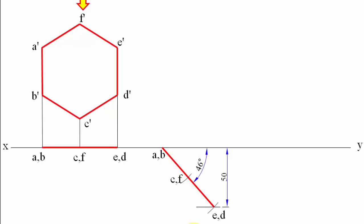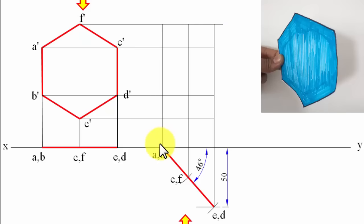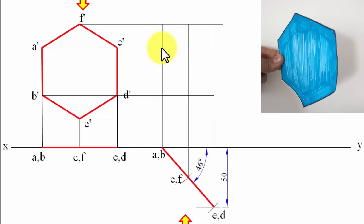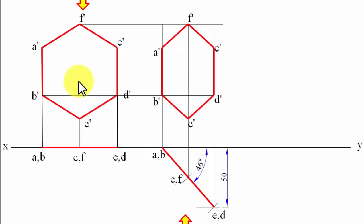Now let's get the simultaneous front view. Drawing projector lines from bottom to top and left to right, we find intersection points. For example, point A lies along the vertical projector and its horizontal from step one. Working out all points and joining them in sequence gives the squeezed hexagon — this is not the true shape but the projected front view.